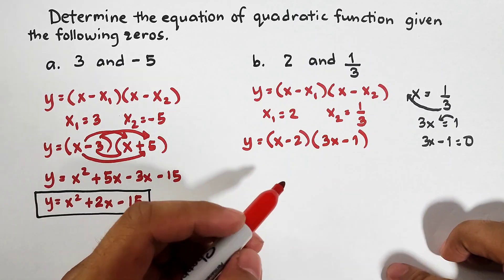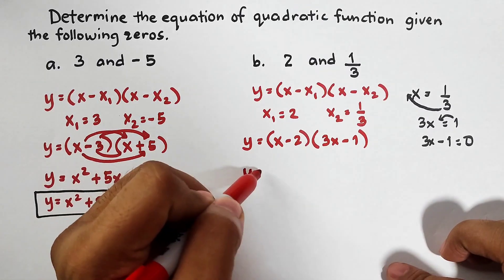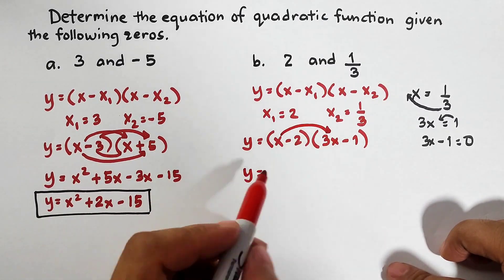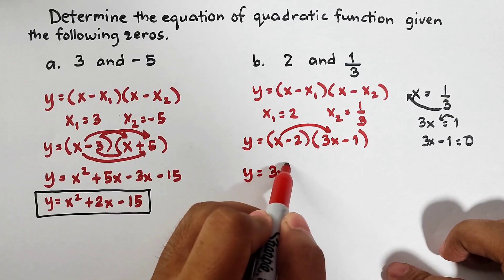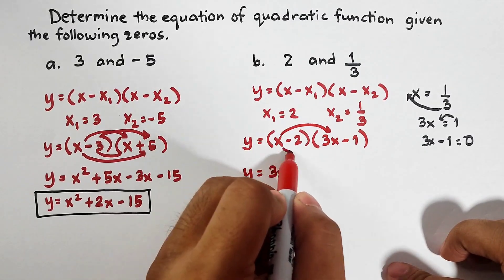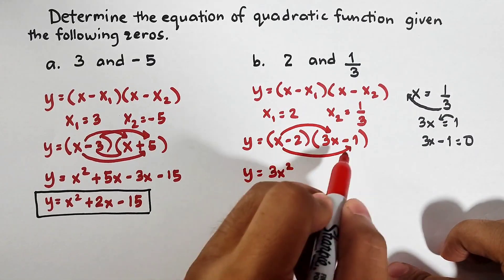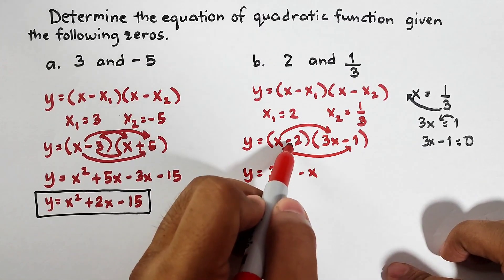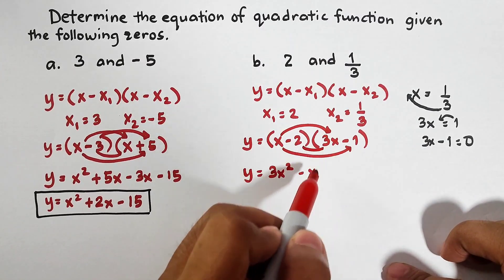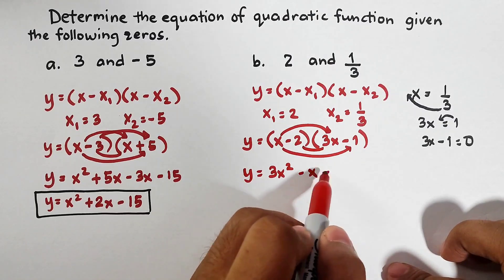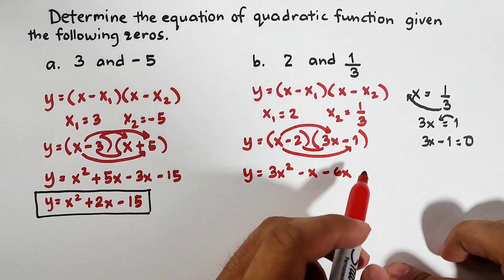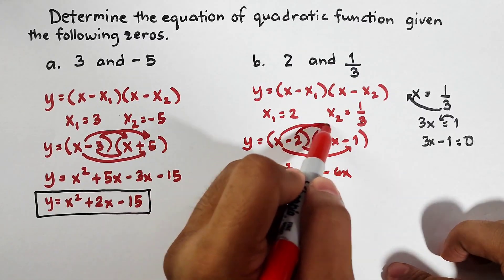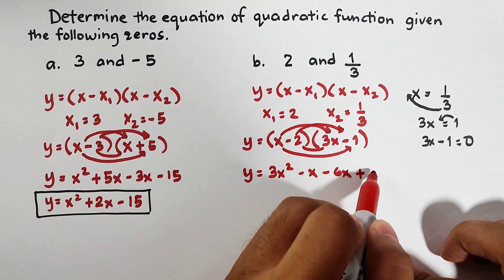First terms, x times 3x, that would be 3x square. Next, the last terms, x times negative 1, that is negative x. Next, you have negative 2 times 3x, multiply them, you have negative 6x. Next, we have negative 2 times negative 1, that is positive 1.